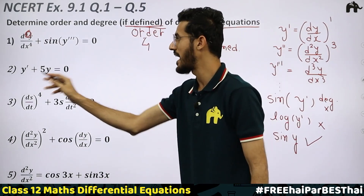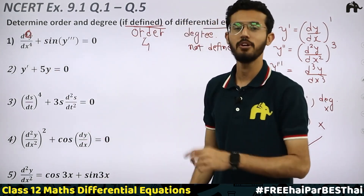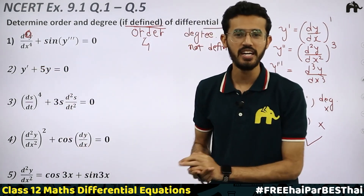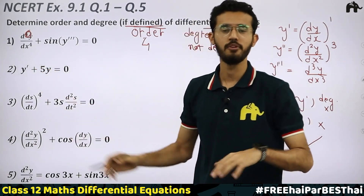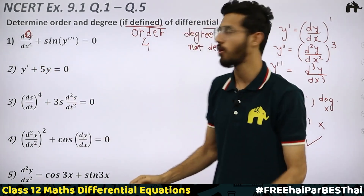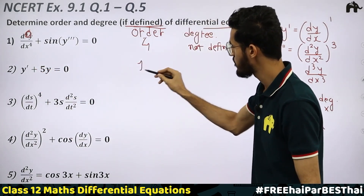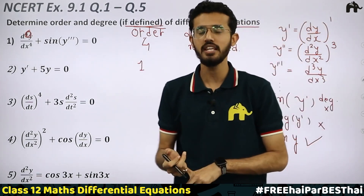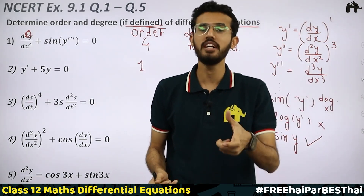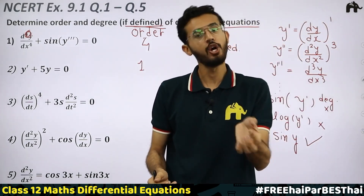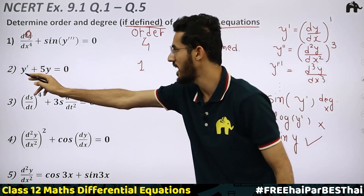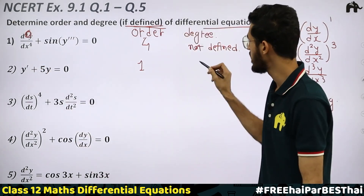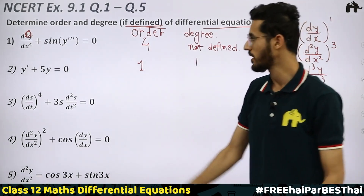Question 2: y-dash + y·y = 0. Here y-dash is the first order derivative and also the highest order, so the order is 1. The degree: we look at the power of the highest order derivative, which is y-dash; its power is 1, so the degree is also 1.